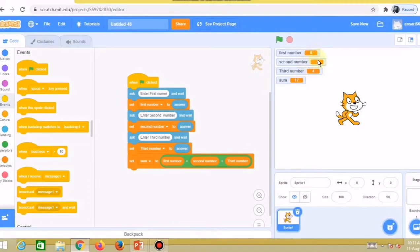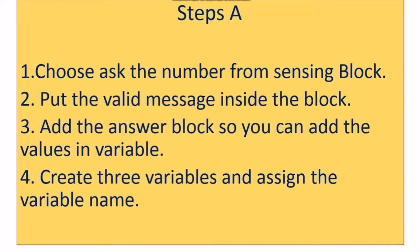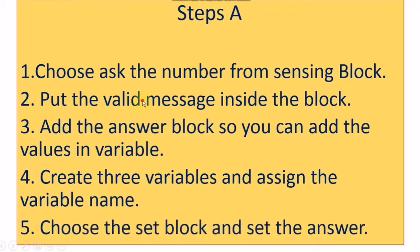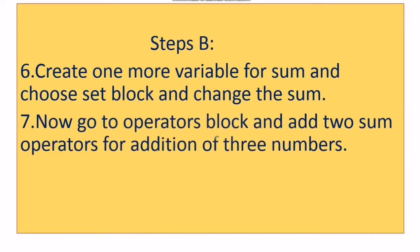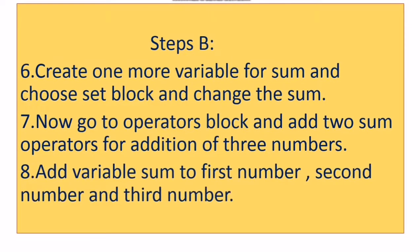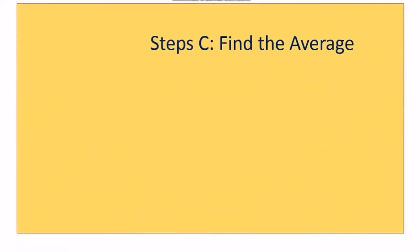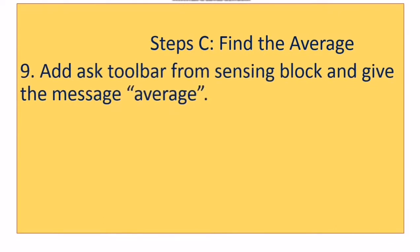The sum equals 6 + 7 + 4 = 17. Now how do we find the average? Looking at the steps: we've completed creating the ask blocks, setting the answer variables, and adding the sum variable for first, second, and third numbers. Next, we find the average.